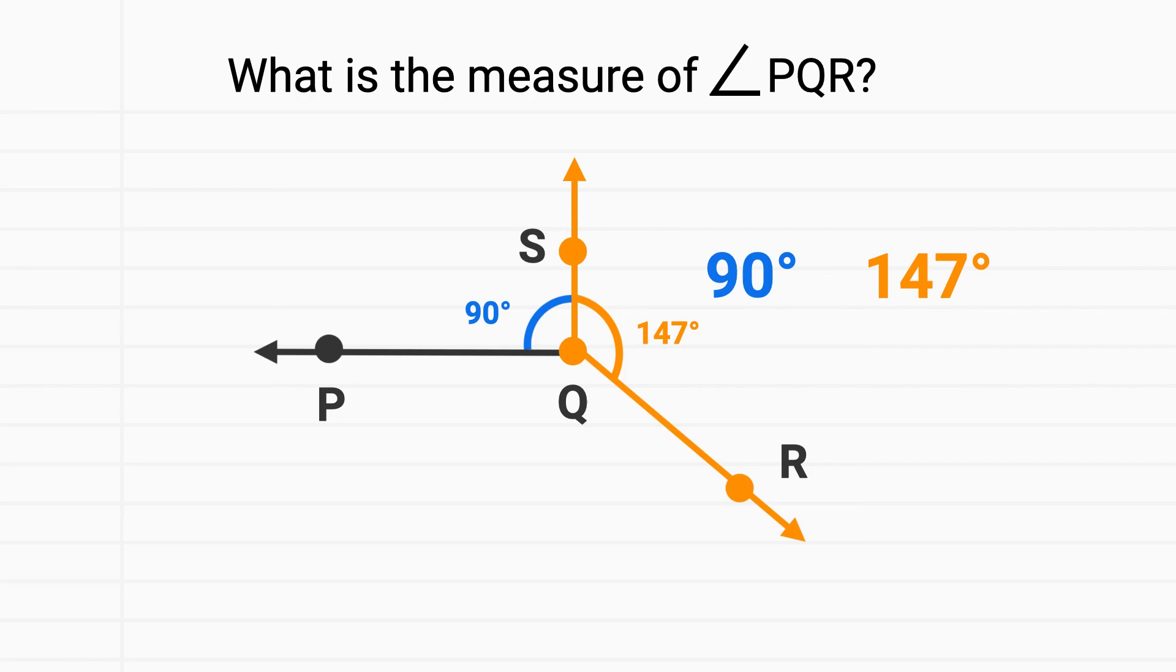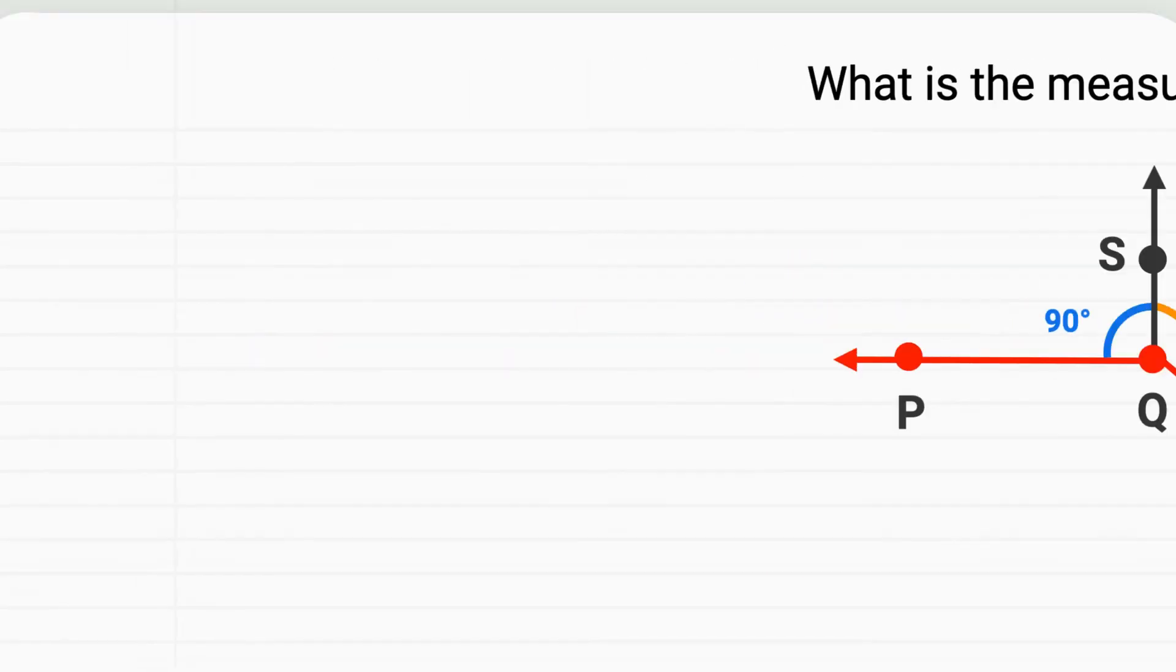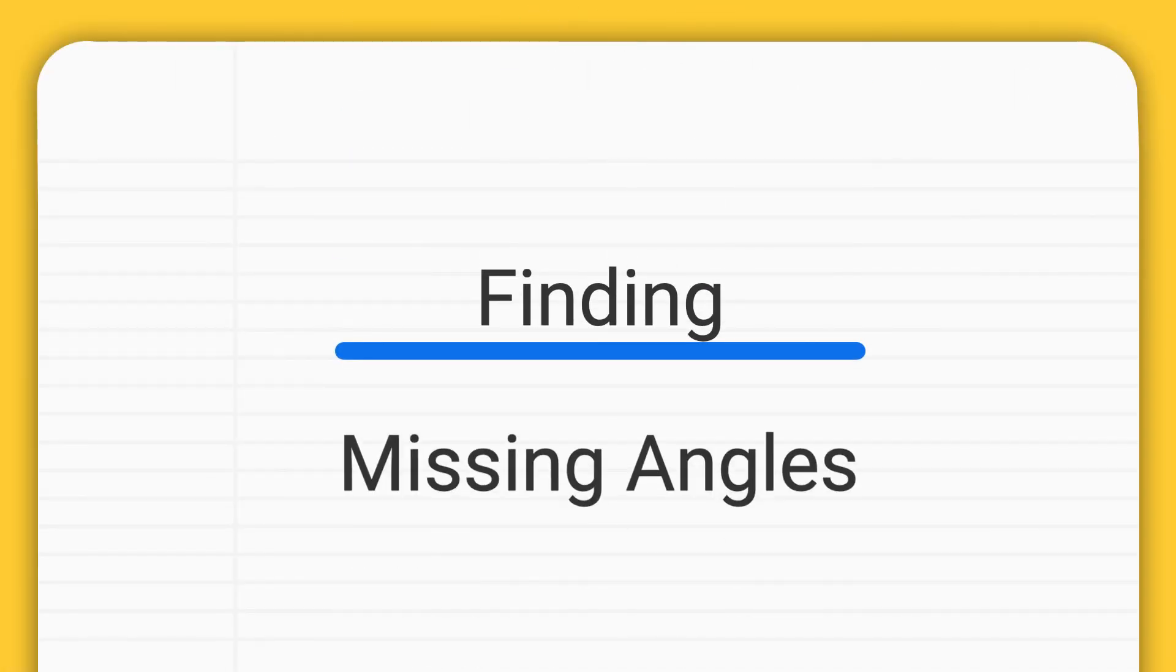To find the measure of angle PQR, we'll add these two pieces together. Angle PQR has a measure of 237 degrees. Today you learned how to find missing angles.